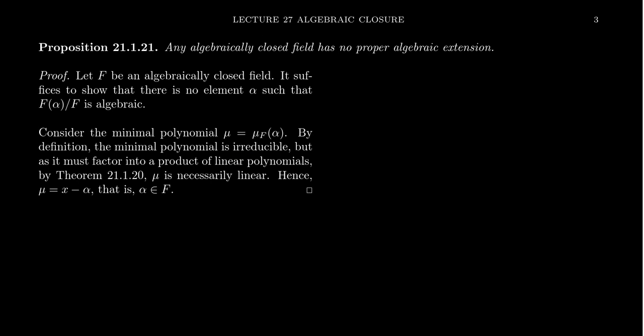So the only way to be irreducible over an algebraically closed field is to be a linear polynomial. Thus μ must have the form μ = x − α. The minimal polynomial is also monic and has α as a root, so the only possibility is x − α. But the coefficients of the minimal polynomial come from F, so for x − α to be a polynomial over F[X], α must be an element of F. Therefore this algebraic element belongs to F, and we get no proper algebraic extensions of an algebraically closed field — hence the name.